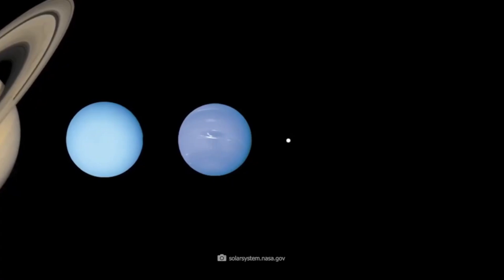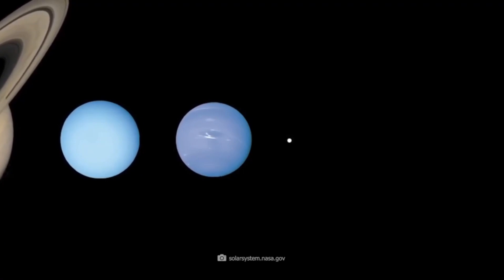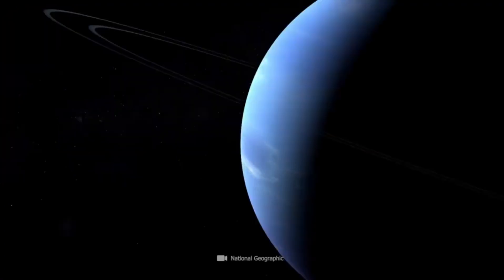Because of its size, Saturn was discovered thousands of years ago, even before the telescope was invented. Its most famous feature is probably its rings, which gave Saturn the name ring planet.